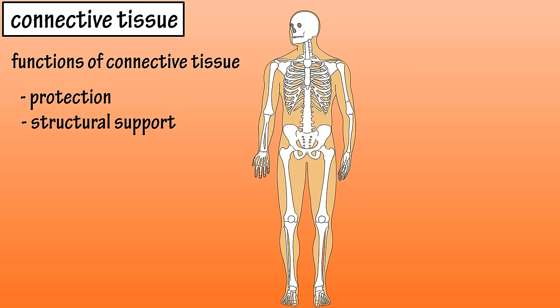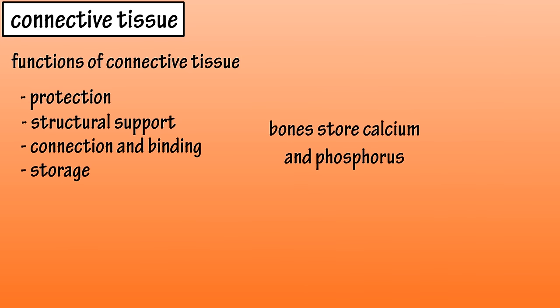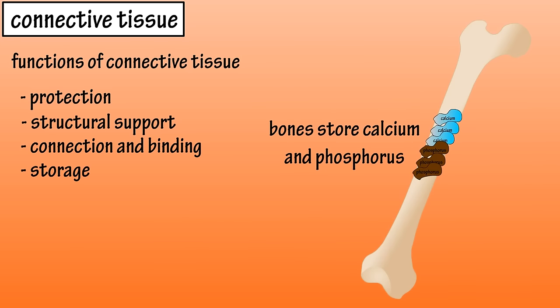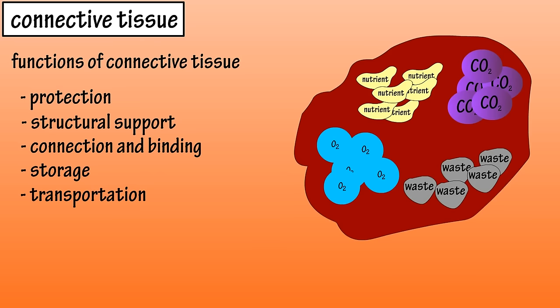Connective tissues connect and bind certain structures. For instance, ligaments bind bone to bone, and tendons bind muscles to bones. It also provides for storage of some nutrients, as bones store calcium and phosphorus. It's important in transportation, as blood, which is a connective tissue, transports nutrients, gases, and waste throughout the body.